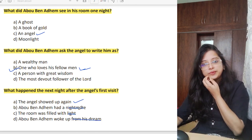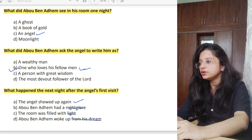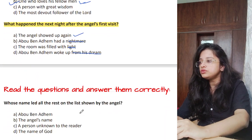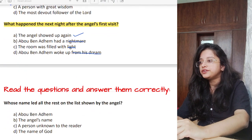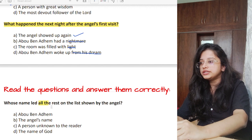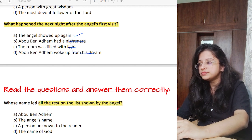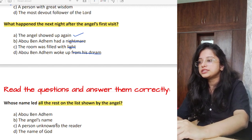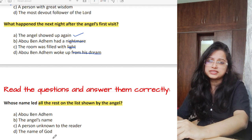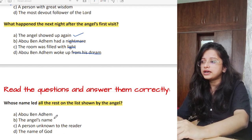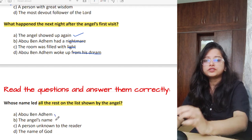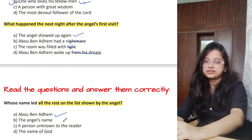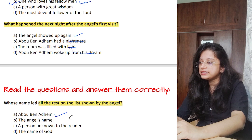Next question: whose name led all the rest on the list shown by the angel? Options: Abu Ben Adham's name, the angel's name, a person unknown to the reader, or the name of God. This is straightforward — Abu Ben Adham's name was first on the list of those whom God loves. Option A is correct.